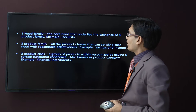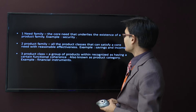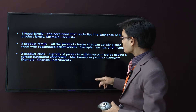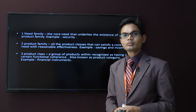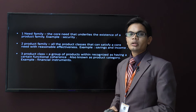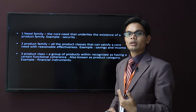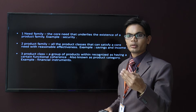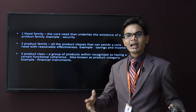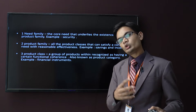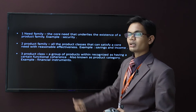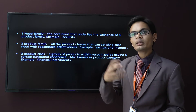The third level is product class — a group of products within a recognized category having a certain functional coherence, also known as product category. Example: financial instruments. To increase savings, I have various sources — I can save money at home, through mutual funds, or through a bank savings account. To increase income, I have sources like rent from land or salary from work. This is the product class — the means I am using for saving and income generation.